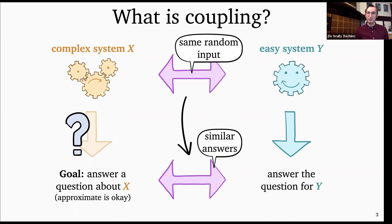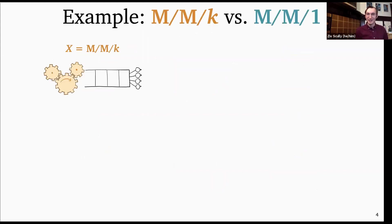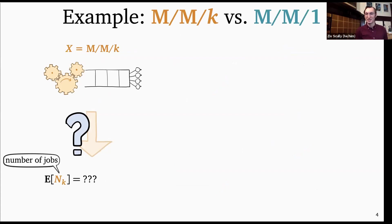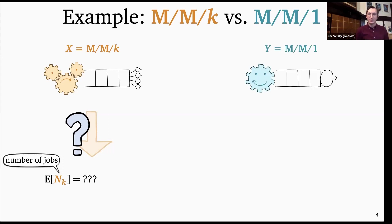Let me give a concrete example. This example is about analyzing the M/M/K queue — not very complex, but just illustrative. The M/M/K queue is a multi-server queueing system, and let's say we're trying to figure out the mean number of jobs in it. This particular question is an exercise in textbooks, but for illustrative purposes I'm going to give a simple bound using coupling. If I've got an M/M/K queue, what easy system might I compare it with? I'm going to compare it to an M/M/1.